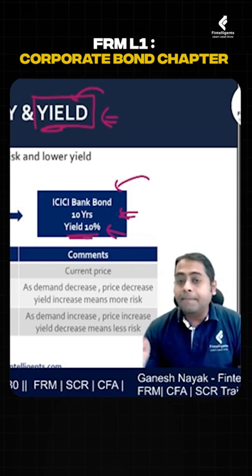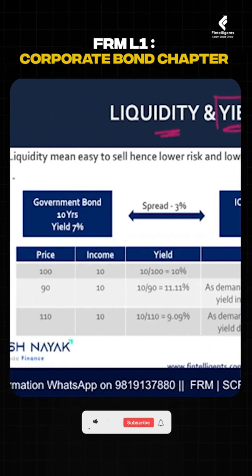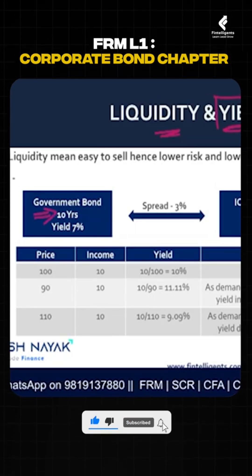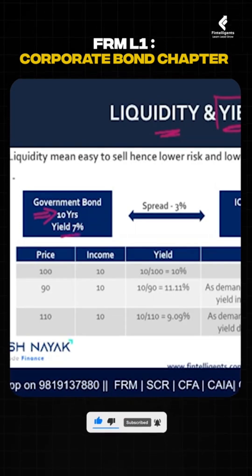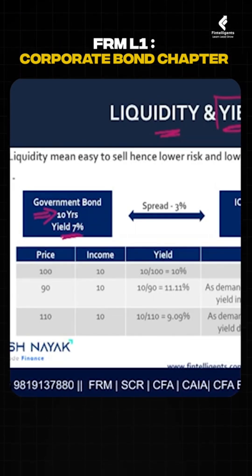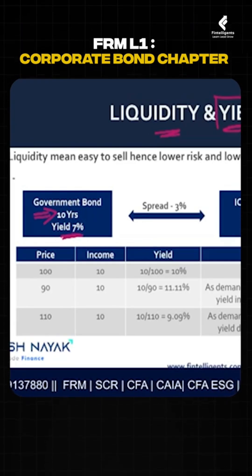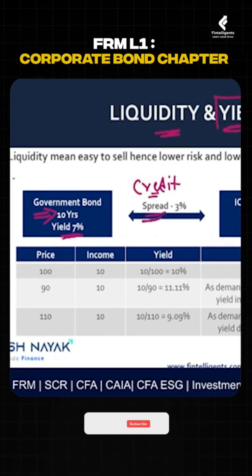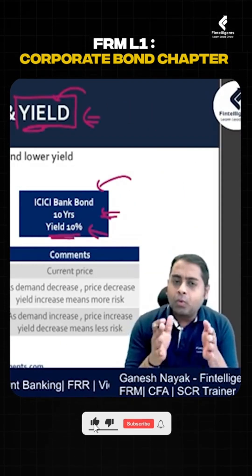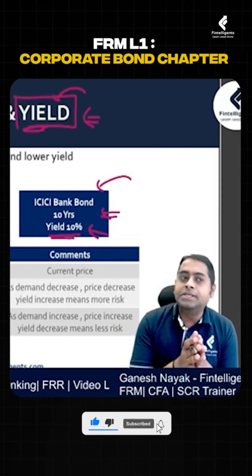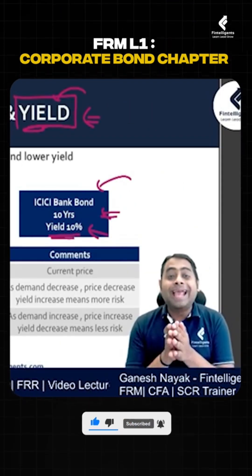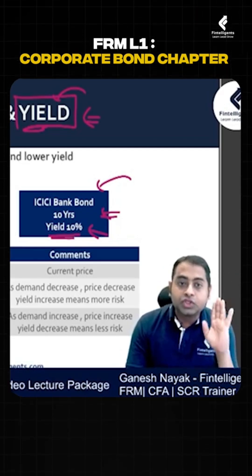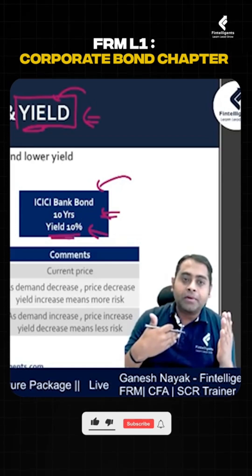Now I am comparing my ICICI bond with the government bond with the same maturity — so the government bond is also a 10 year bond — and let us assume that the yield is 7 percent. So what is the difference? This is called a credit spread. It tells me what is the gap between the interest paid by the government bond, which is most secure, and your bond, the ICICI bond.